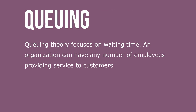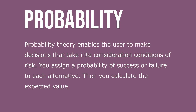Queuing theory focuses on waiting time. An organization can have any number of employees providing service to customers. Probability theory enables the user to make decisions that take into consideration conditions of risk. You assign a probability of success or failure to each alternative, then calculate the expected value.